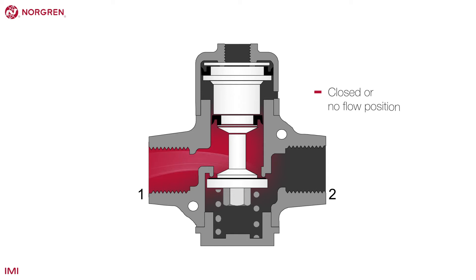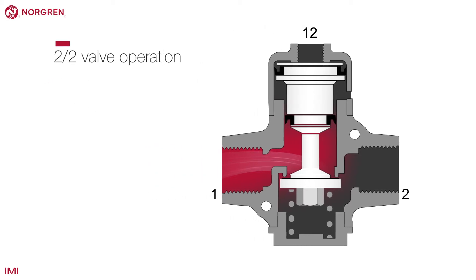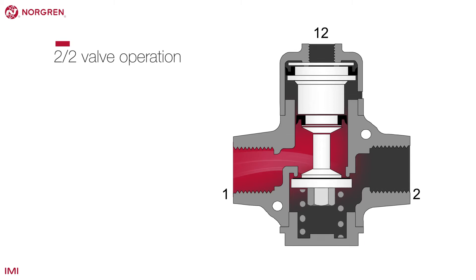The operation of the valve is also indicated by a number. In this case, it's 1-2. 1-2 refers to the flow of air from port 1 to port 2. So, this 2-2 valve with 1-2 or 1-0 operation works as follows.